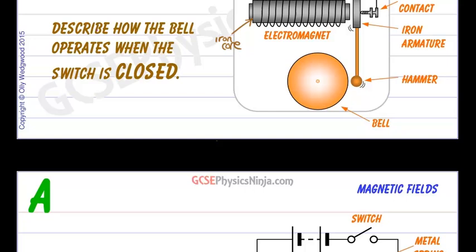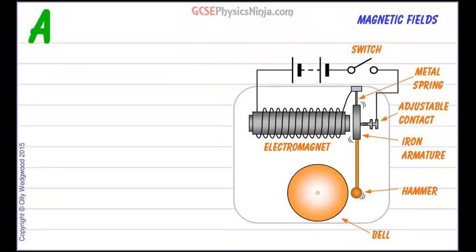Let's describe what happens when we close the switch. When the switch is closed, number one, a current flows in the circuit, switching on the electromagnet.